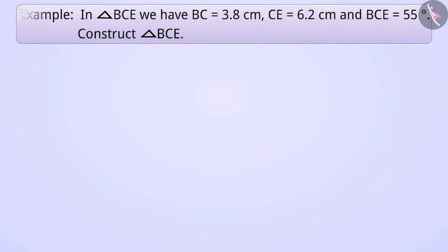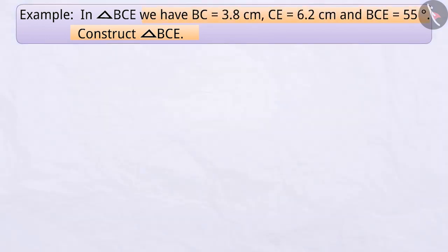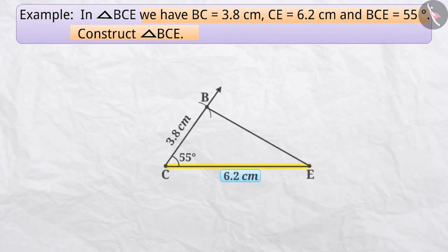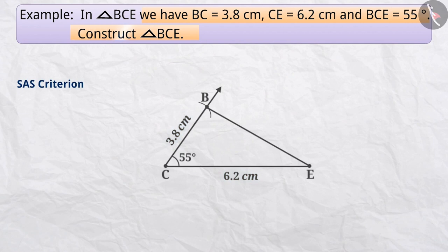In triangle BCE, we have BC equal to 3.8 cm, CE equal to 6.2 cm, and angle BCE equal to 55 degrees. We are given the length of two sides of triangle BCE and one angle. Since we know the length of two sides and the measure of the angle included between them — angle C — we can construct triangle BCE using the SAS criterion.